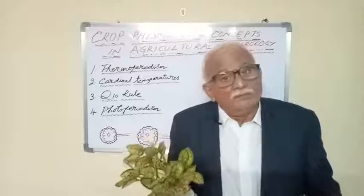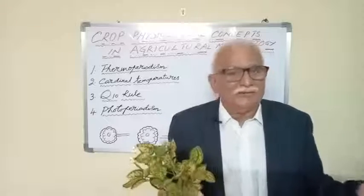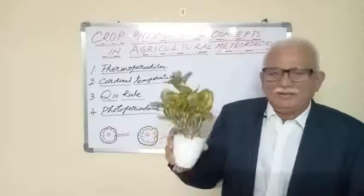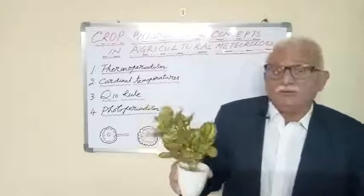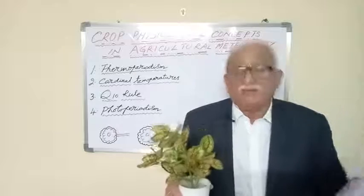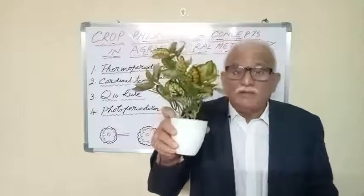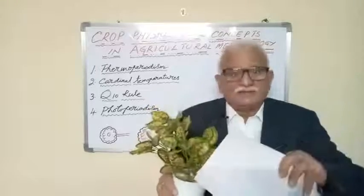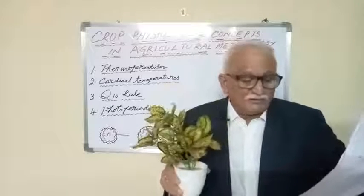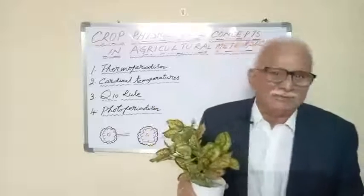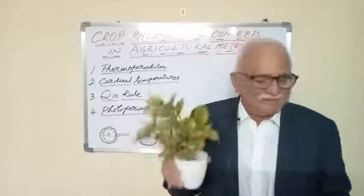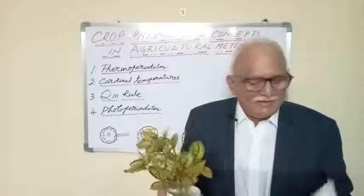The Van't Hoff equation also involves enthalpy. Agrometeorologists must know the Van't Hoff rule or Q10 rule with reference to enthalpy — specifically the temperature dependence of the equilibrium constant. Temperature controls the equilibrium exchange of gases and enzymatic reactions. Equilibrium is very important here. The temperature dependence of the equilibrium constant is linked to the enthalpy change of a process.